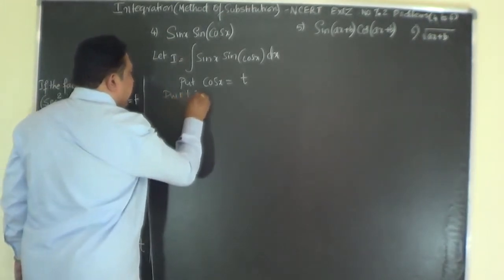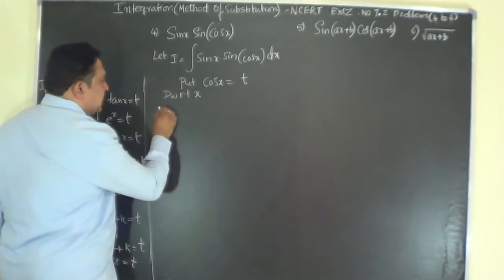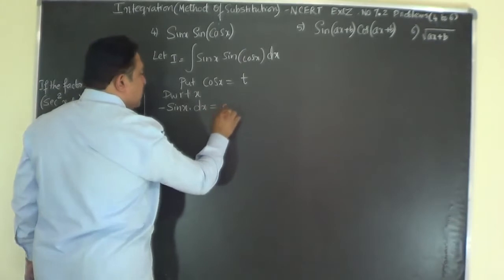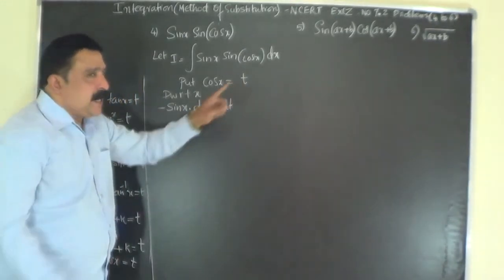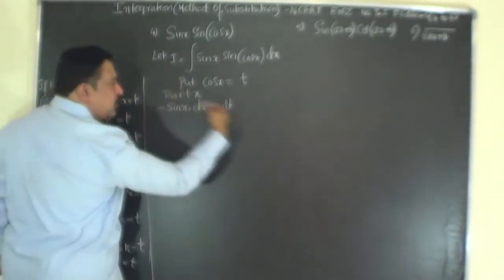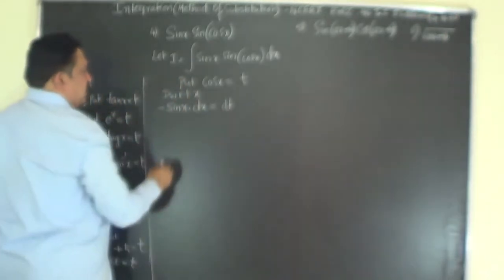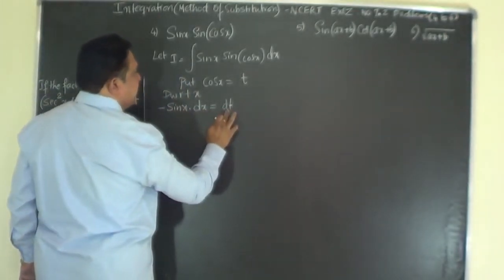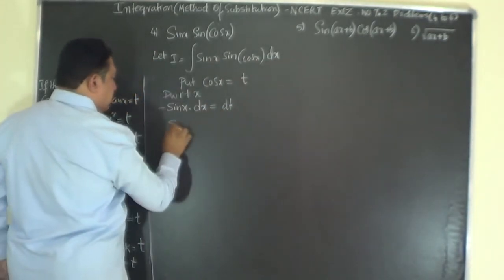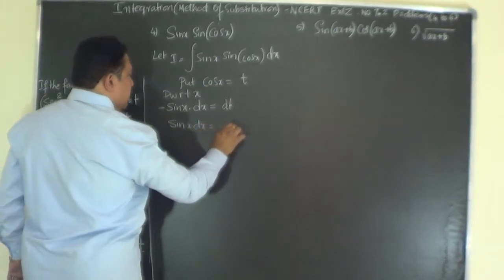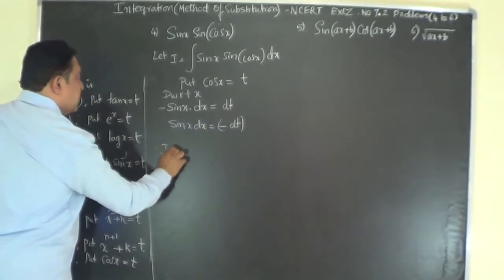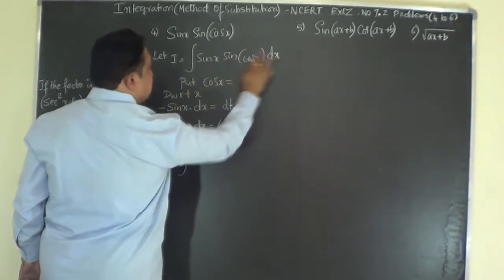Differentiating with respect to x: the differential coefficient of cos x is minus sin x, so minus sin x dx equals dt. Therefore sin x dx equals minus dt.